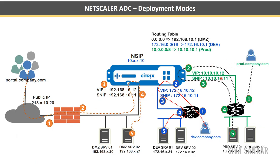In two-arm mode, even if you don't have VIPs yet, you need the subnet IPs configured. Traffic comes to the virtual IP and is forwarded by NetScaler using the SNIP. NetScaler knows which SNIP to use because you created a static route for the 172.16.0.0 subnet bound to that VLAN and interface. Traffic from back-end servers returns to NetScaler, and any unknown traffic defaults to the DMZ interface via the default route.